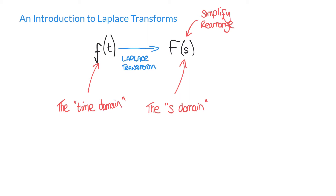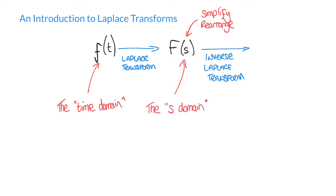The idea is that when we apply the Laplace transform, we can transform our function in the time domain to the s domain. We can make some simplifications, and then when we're happy, we can do what's called the inverse Laplace transform to convert back to the time domain. And we'll hopefully have found our solution in a much clearer form than when we began.